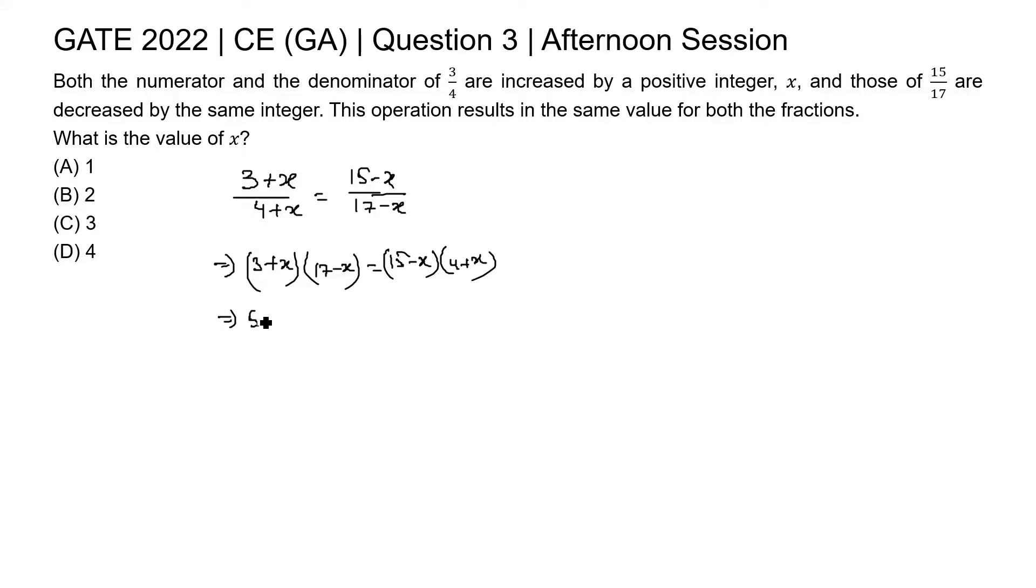This is 3 into 17, 51. This is 3x minus 3x plus 17x, so this is 14x minus x square equal to 15 into 4, 60.